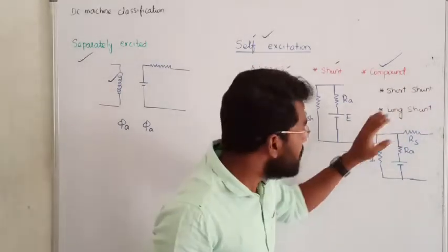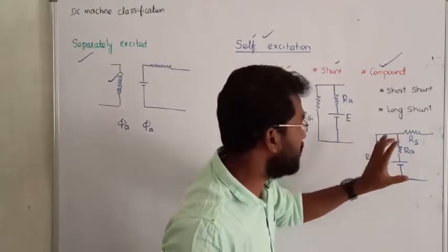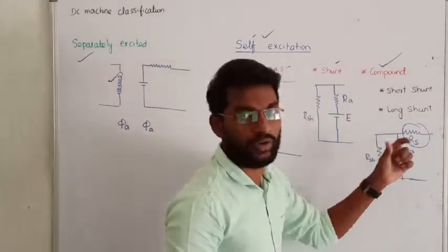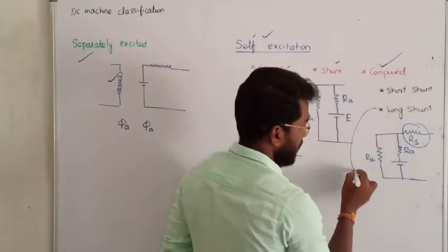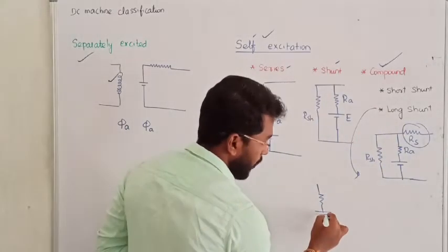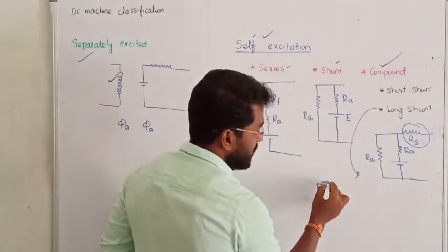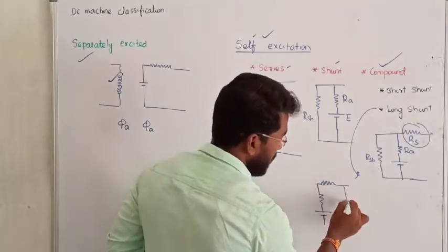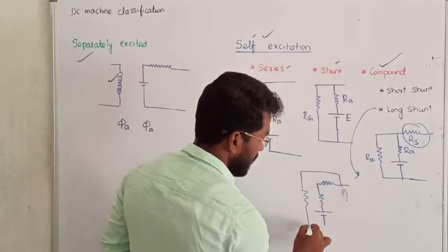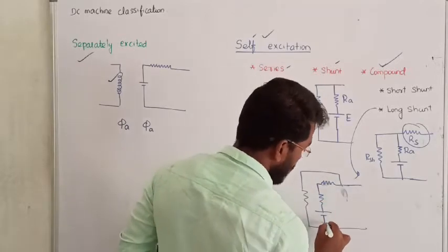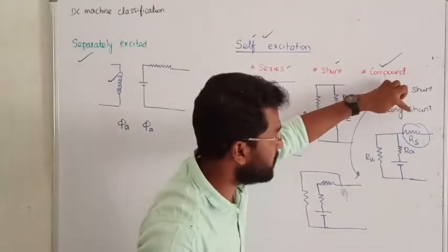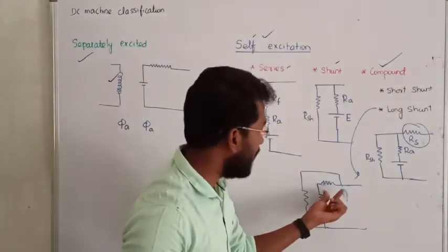In case of short-shunt, the shunt winding will be connected first with the armature winding, and then we connect the series field winding. In case of long-shunt, first design the armature winding, then connect the series field winding, and then connect the shunt field winding across both. This is called long-shunt — the shunt is connected after the series winding.